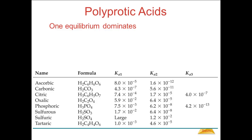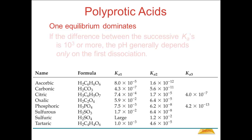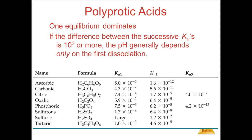Here are the values of the equilibrium constants for several polyprotic acids, as shown in the table in the back of your book. If you compare the values of the successive Ks, you will find that for the most part there is at least a factor of a thousand between the values. If the difference between the successive Ka values is 10 to the third or more, the pH generally depends only on the first dissociation.